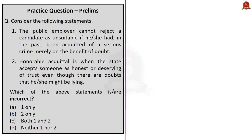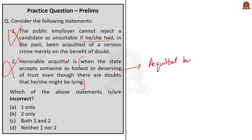The next question has two statements. Statement 1: the public employer cannot reject a candidate as unsuitable if he or she had been acquitted of a serious crime merely on benefit of doubt — this is incorrect, as today's news was specifically about the authority of the public employer to reject such candidates. Statement 2: honorable acquittal is when the state accepts someone as honest even though there are doubts they might be lying — this is also incorrect, as this describes acquittal by benefit of doubt. Both statements are incorrect, so the correct answer is Option C: both 1 and 2.